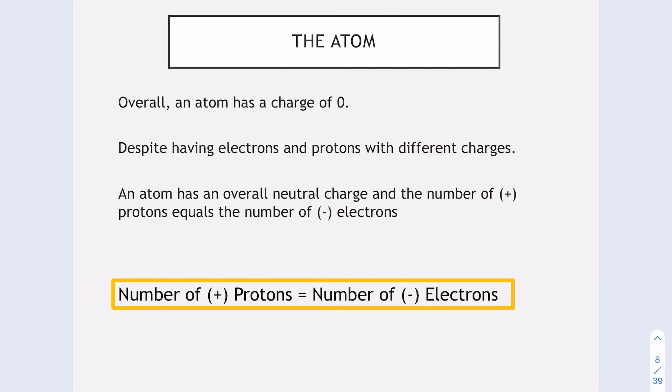Overall, an atom has a charge of zero, despite having protons with positive charges and electrons with negative charges. This is because the number of protons equals the number of electrons, as I've got in this little box down the bottom. That is why an atom overall is neutral.